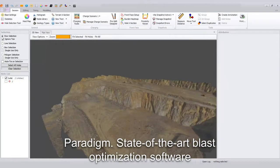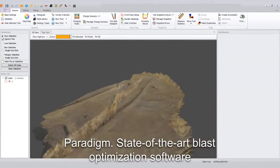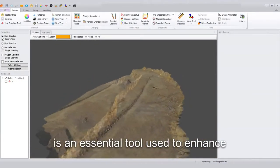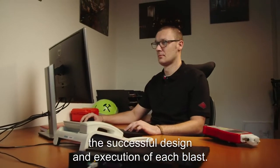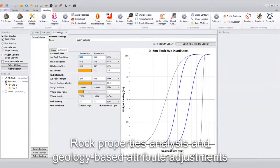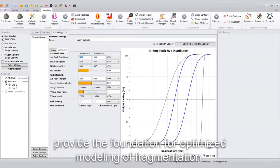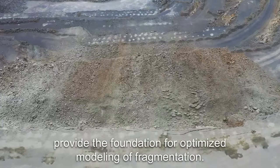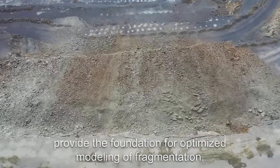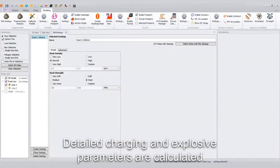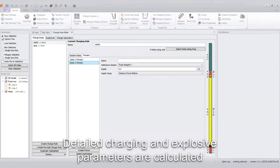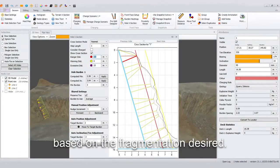Paradyn, state-of-the-art blast optimization software, is an essential tool used to enhance the successful design and execution of each blast. Rock properties analysis and geology-based attribute adjustments provide the foundation for optimized modeling of fragmentation. Detailed charging and explosive parameters are calculated based on the fragmentation desired.